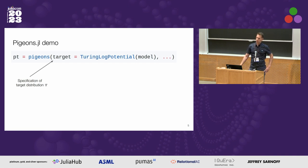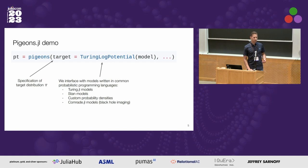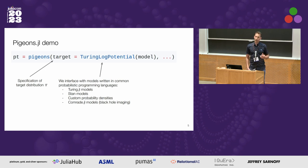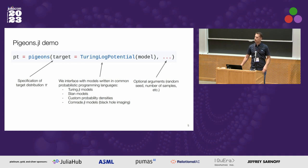It is actually very easy to use Pigeons. In the Julia package you simply call the Pigeons function and specify what your target distribution is. In this case our target is coming from a Turing.jl model — you simply write a Turing model and wrap it in a TuringLogPotential. We allow interfaces with various probabilistic programming languages such as Turing models, Stan models, custom probability densities where you write your own function, and also Comrade.jl models which are used for black hole imaging. You can also supply arguments such as random seed and number of samples.